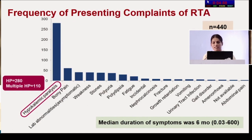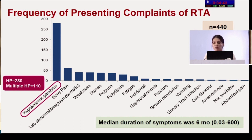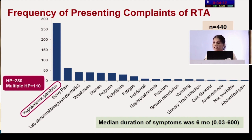The most common presenting complaint was hypokalemic paralysis, seen in 280 patients; 110 patients suffered multiple episodes before diagnosis was made. Hypokalemic paralysis patients will not come to a rheumatologist — they will be seen by other colleagues. We need to communicate that all hypokalemic paralysis patients should be evaluated for RTA, and if RTA is present, they should be evaluated for Sjogren's syndrome. This represents an important opportunity for early diagnosis.